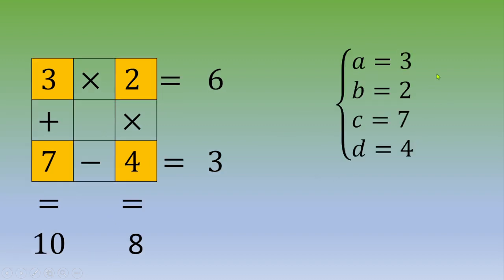So, value of A, B, C, D, this is 3, 2, 7, 4.